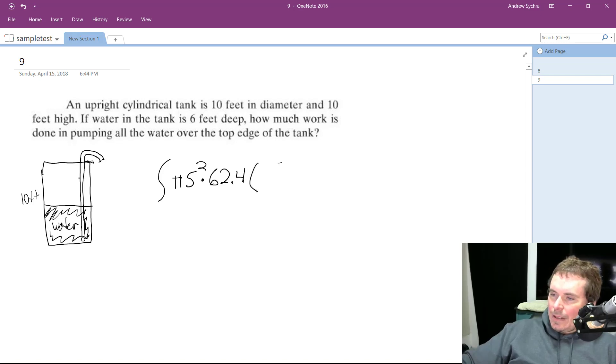And then we need the volume. The volume is what's changing dynamically, so in this case, it's going to be 10 minus y. So we're starting at 0 to 6 because we're draining out 6 feet.